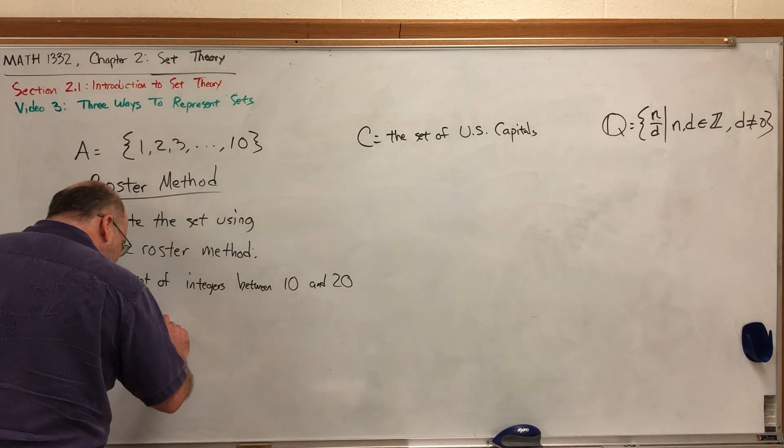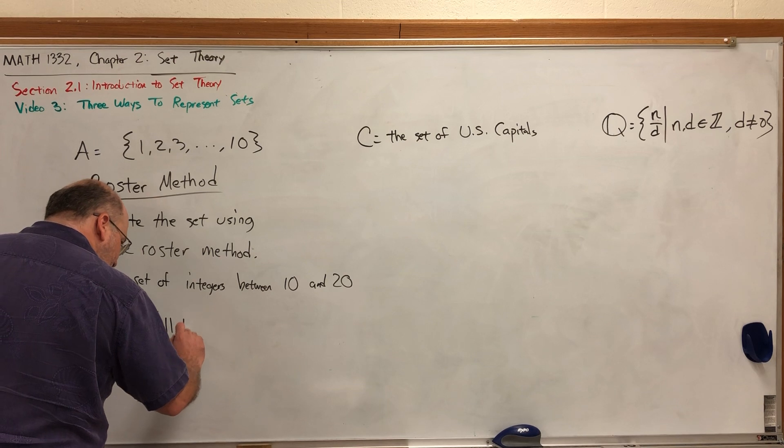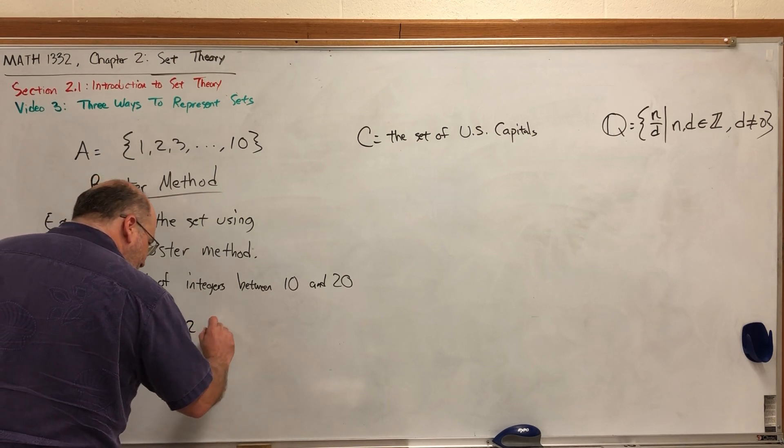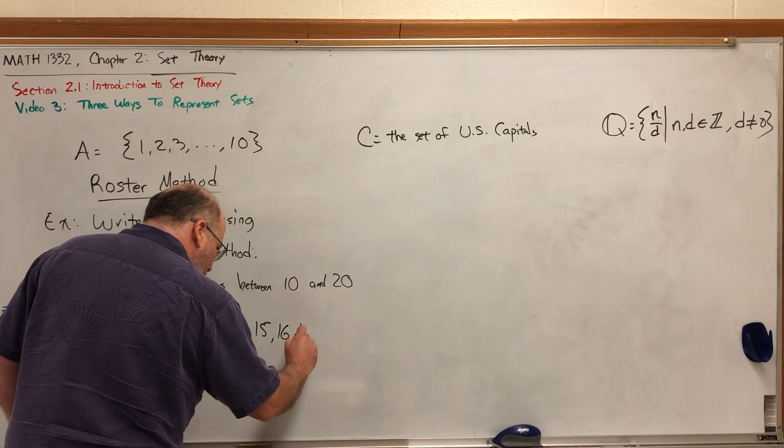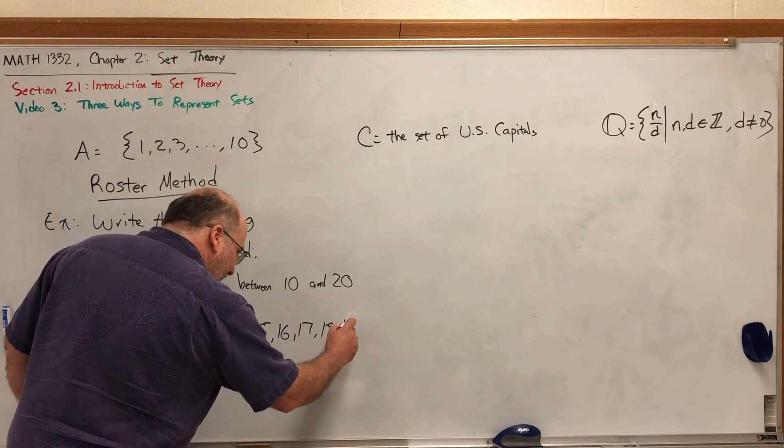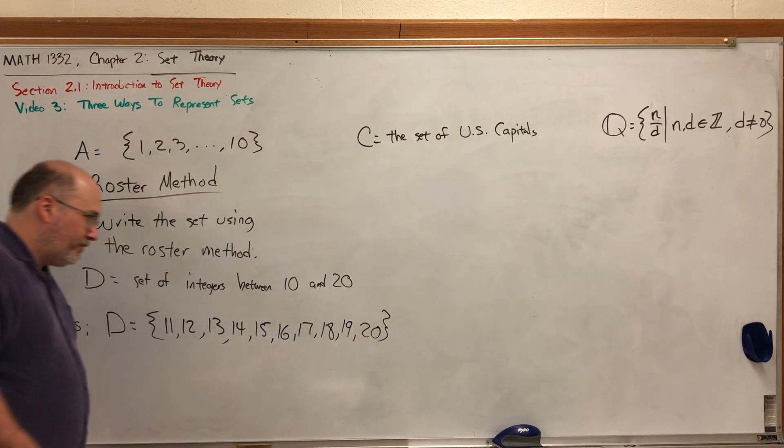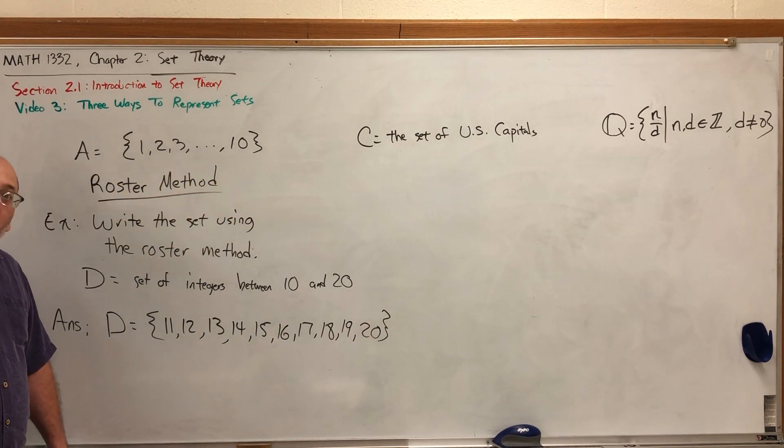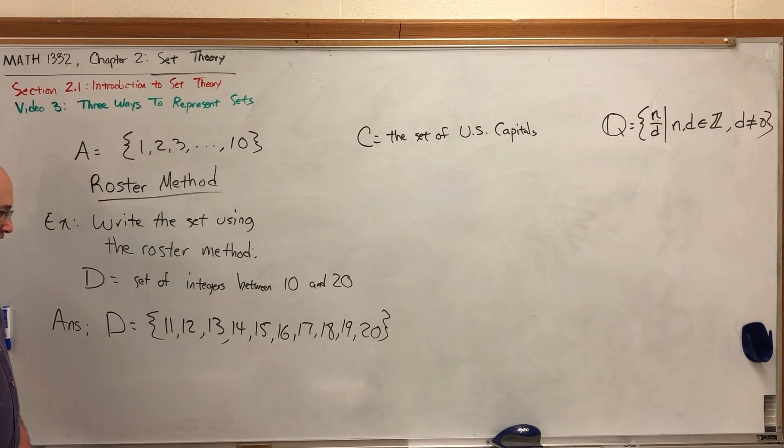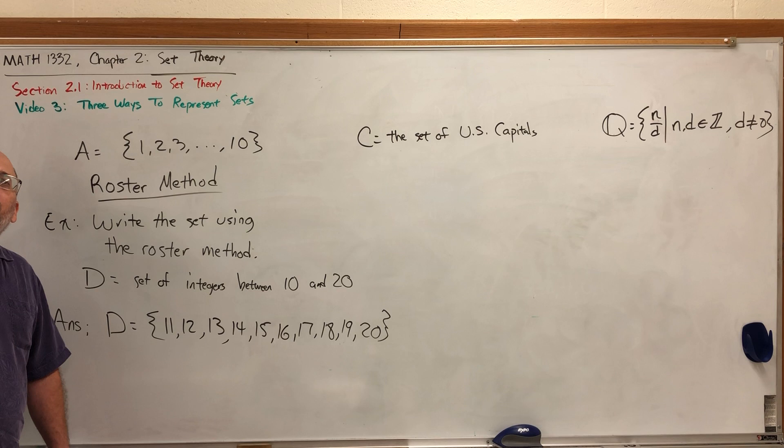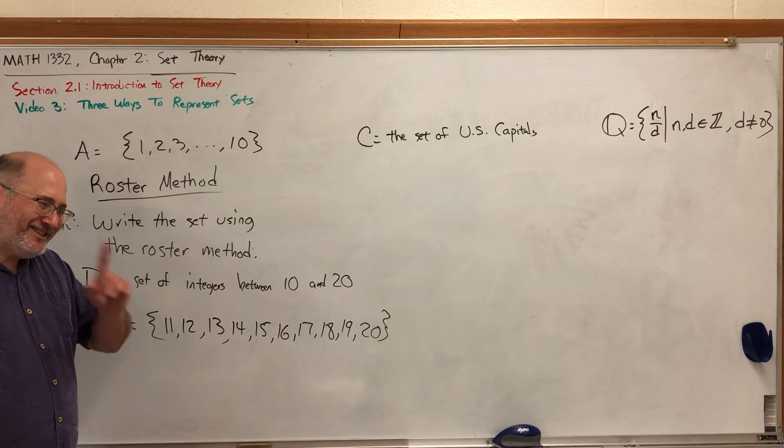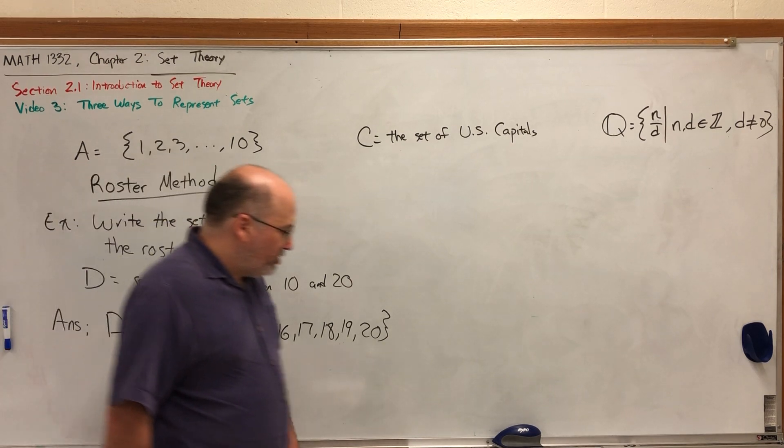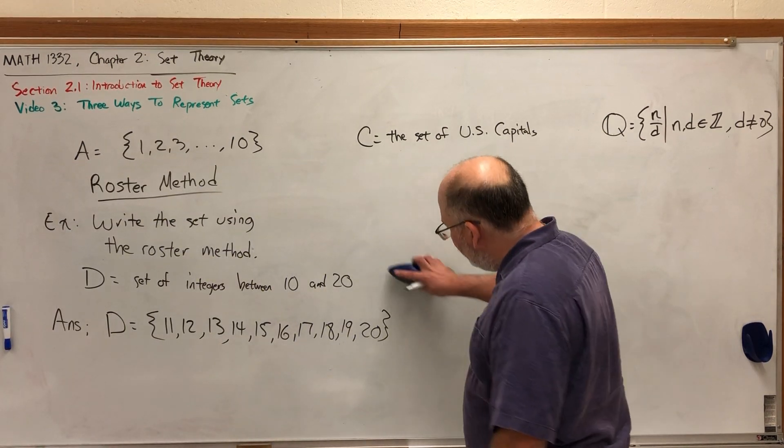So what is the first integer between 10 and 20? 11, and then 12, and then 13, and then we could use some ellipses, but this set is short enough that I think I can write it without. Oh no, my answer's wrong! 11, 12, 13, 14, 15, 16, 17, 18, 19, 20. Why is it wrong? Because the word between means not including unless it says inclusive. This section should not contain 20, so I'll remove it.